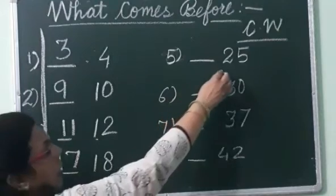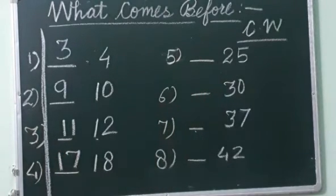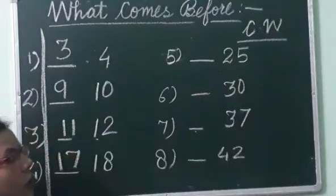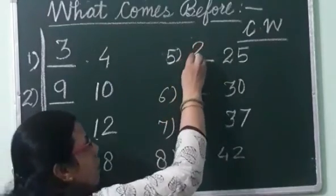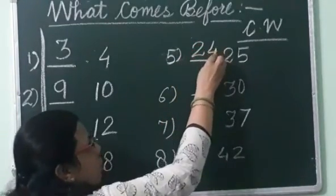Then 25. Now if we start counting from 1, it will be too long. So we should say less. Where will we start from? 21. 21, 22, 23, 24, 25. So what did I say just before 25? 24.